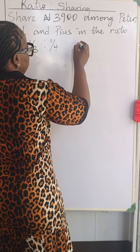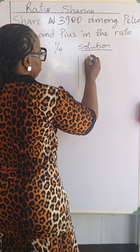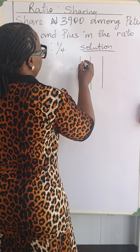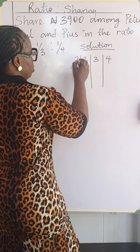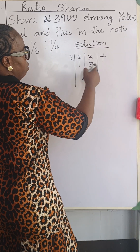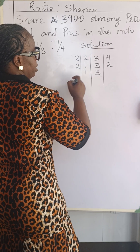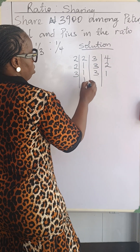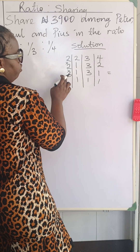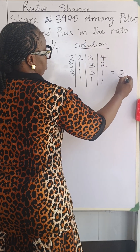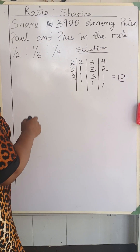Let's look at the division method. Write down two, three, and four. Using two: two into two is one, two into three cannot go so bring it down, two into four is two. Since three is still there, use two again: one, bring down the three, and two into two is one. Then use three: three into three is one, one, one. Multiply out: two times two is four, four times three is twelve. So the LCM is twelve.